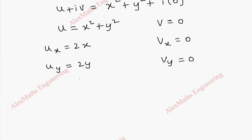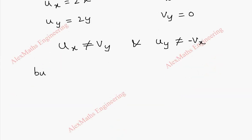Now we find uₓ is not equal to vᵧ and uᵧ is not equal to -vₓ because this is 2x and this is 0. But if z = 0, it means x is 0 and y is 0. So what happens is uₓ will become 2·0 which is 0. uᵧ becomes 2·0. This is also 0.